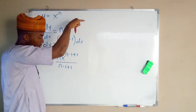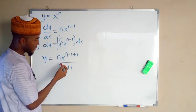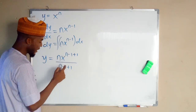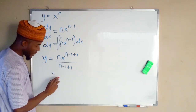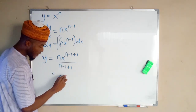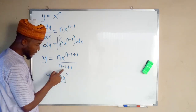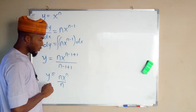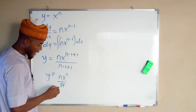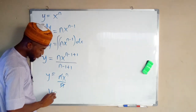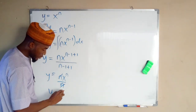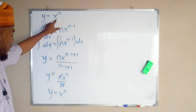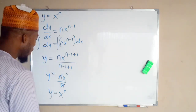In integration you add before dividing, but in differentiation you multiply before subtraction. Now let us simplify: minus one plus one is zero, so we have only n here. This is the same as n times x to the power of n divided by n, because minus one plus one is zero leaving only n, and n cancels n. So y equals x to the power of n.